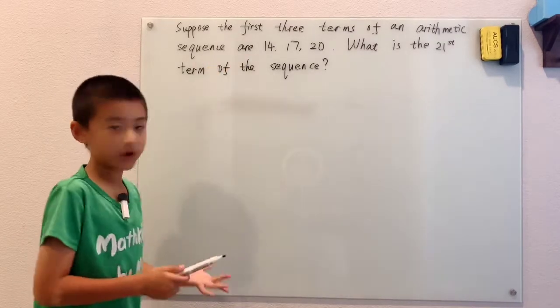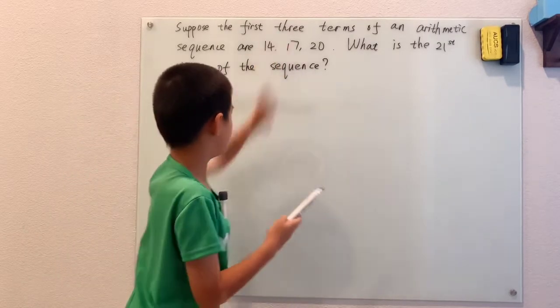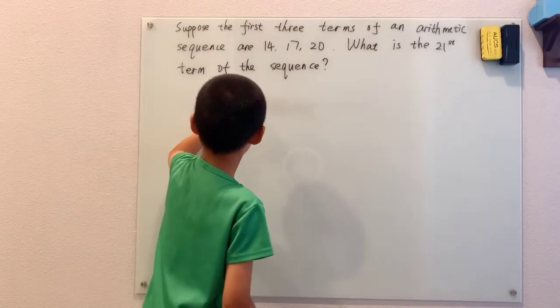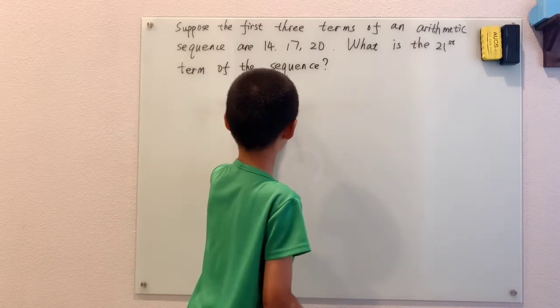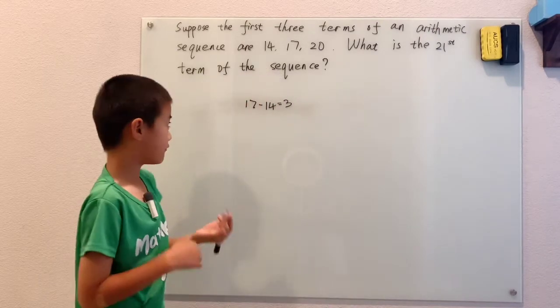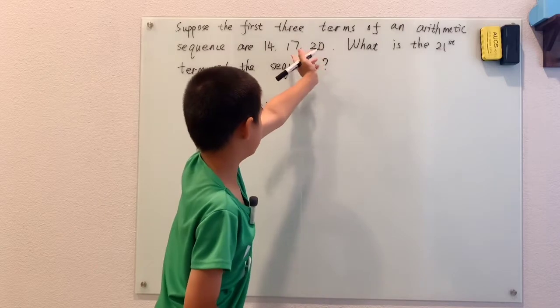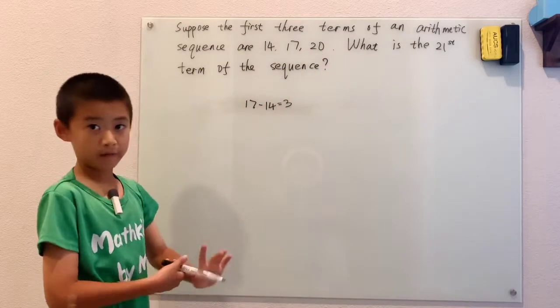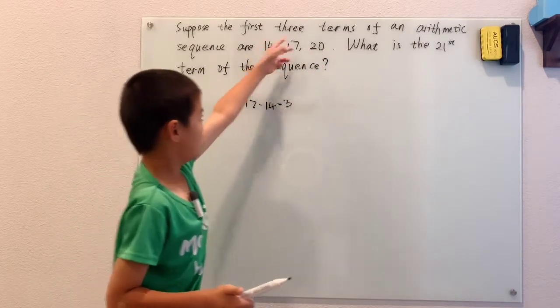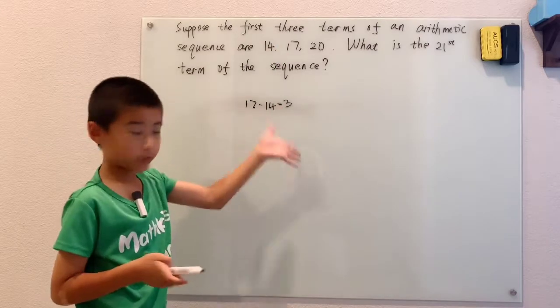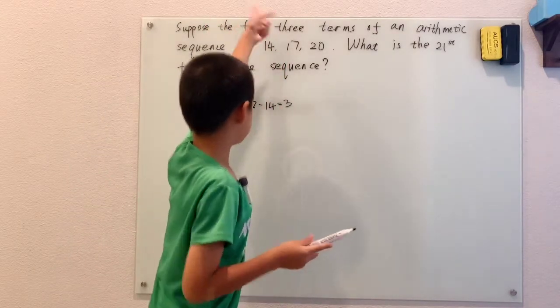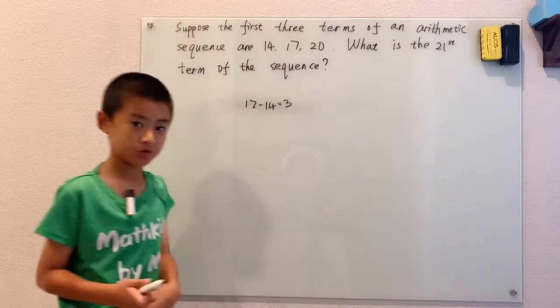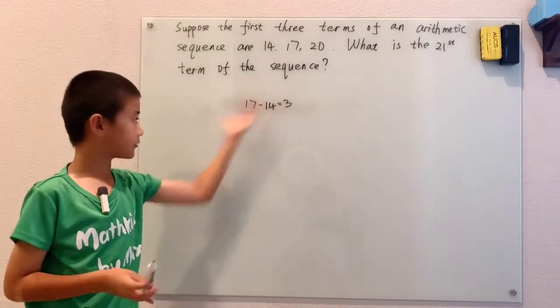So in order to figure out the common difference first in the sequence, just take 17 minus 14, and that would be 3. You could have also just took 20 minus 17 and got 3, but no matter which of those two you use, you still get 3. And you also could have just saw 14 plus 3 is 17, 17 plus 3 is 20, so the common difference would have to be 3.